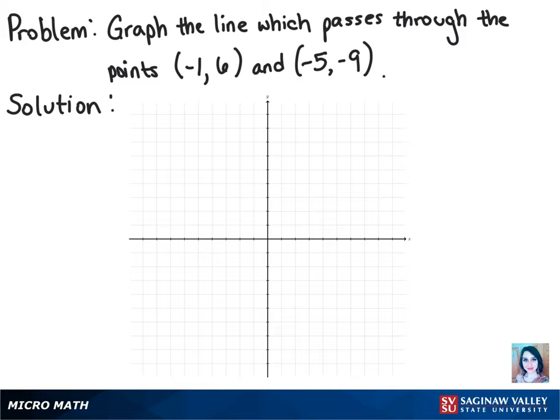Let's graph the line which passes through the points negative 1 comma 6 and negative 5 comma negative 9. We're going to move to the left on the x-axis 1 unit and up 6. That gives us our first point.